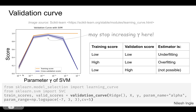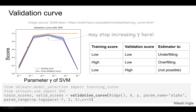We can visualize how the score varies accordingly. The orange line is the training score and the blue line is the cross-validation score. As the value of gamma continues to increase, we can see that the cross-validation score is pretty close to the training score.